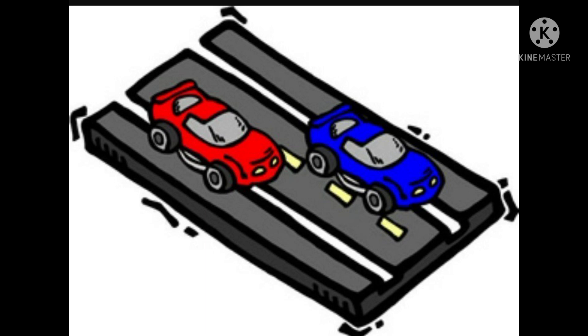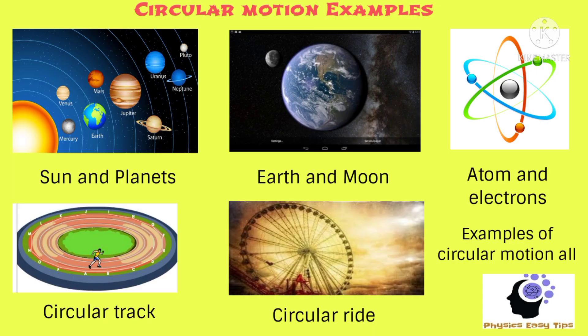Now coming to circular motion, there are many examples of circular motion, like a boy running on a circular track. As I told you before, any object moving in a circular path is said to be in circular motion.